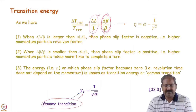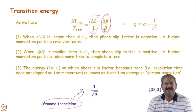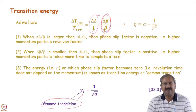Gamma transition is 1 / sqrt(alpha). When the machine operates at gamma transition, the revolution time becomes independent of momentum — a particle deviated in momentum has the same revolution time as the on-momentum particle. This is the isochronous mode. The cyclotron operates in this mode, where revolution time doesn't depend on momentum. A synchrotron can operate in all three modes: isochronous (at gamma_transition), above gamma_transition (slip factor positive), and below gamma_transition (slip factor negative).